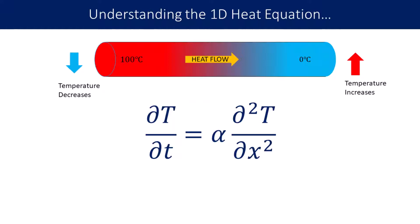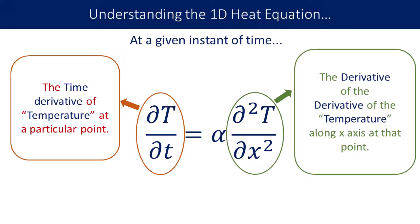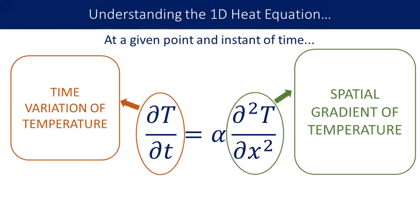But how do we relate the rate at which the temperature rises at a point to the temperature distribution around that point? That's where the 1D heat equation comes in handy. In the equation, the left side term is the time derivative of temperature at a given point. The right side term is the second derivative of temperature along the x-axis at that point. Alpha is a material constant. In other words, this equation relates the time variation of temperature to the spatial gradient of temperature.